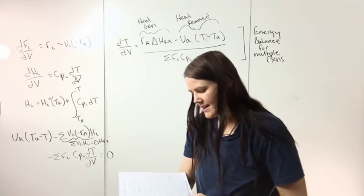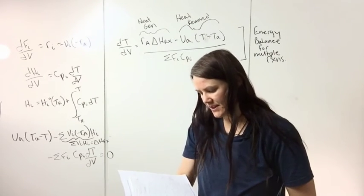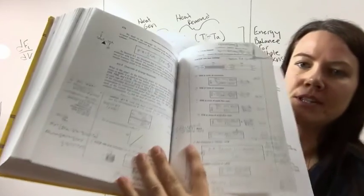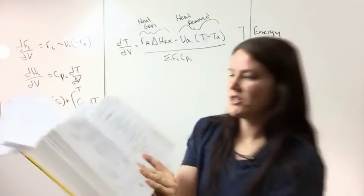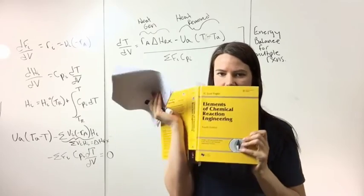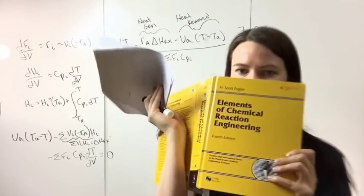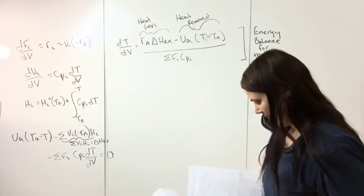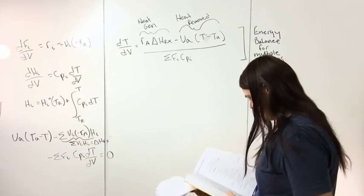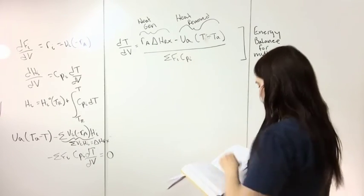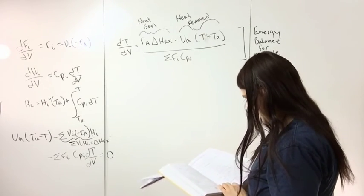If you look at Table 8-1 — which contains all of the energy balances — it's on page 476 in The Elements of Chemical Reaction Engineering by Fogler. This dT/dV equation is equation number six on that table.